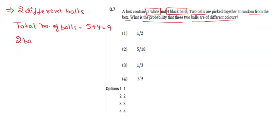Now the probability of picking two balls from these will be 9C2. And this equals 9 factorial divided by 2 factorial times 9 minus 2, which is 7 factorial. This comes out to 36.